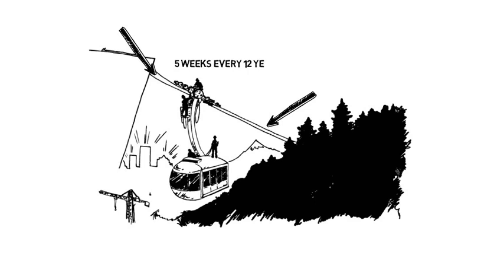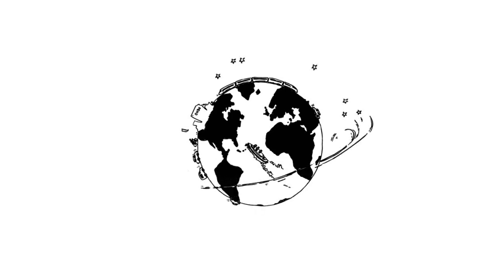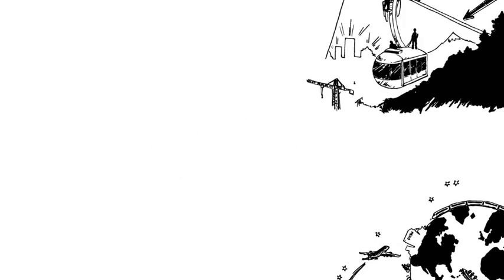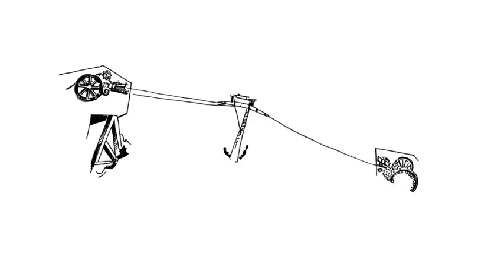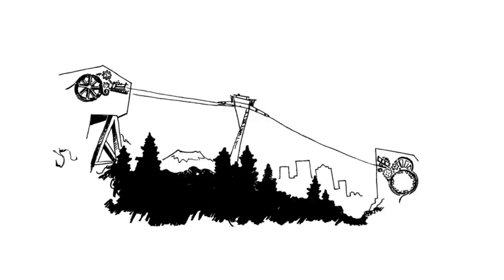The tram's Doppelmayer staff have been trained specifically for this task, and they travel all over the world performing this work. There are four track ropes, and each one holds about 124,000 pounds of tension, or about 12 elephants.